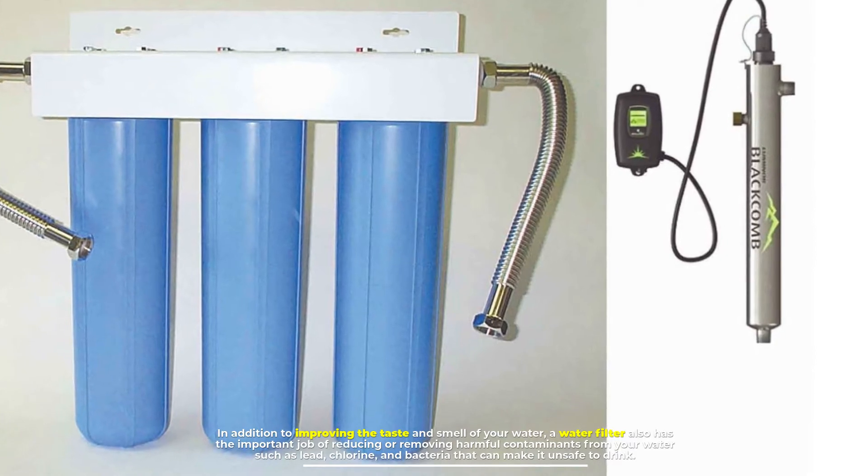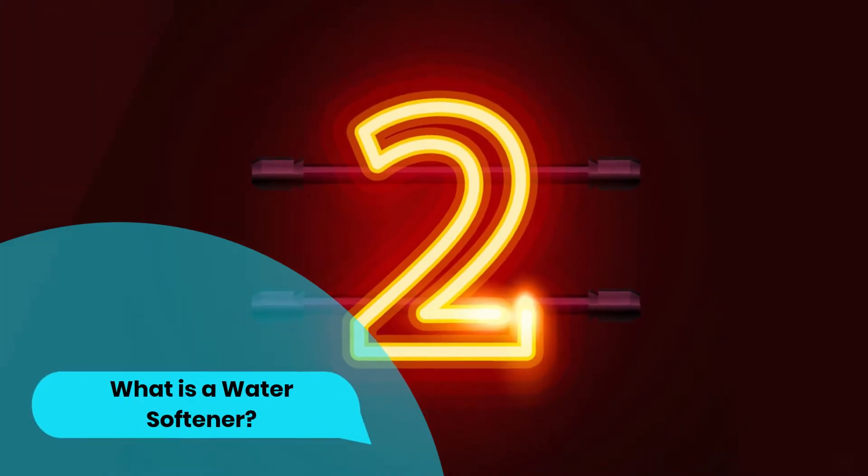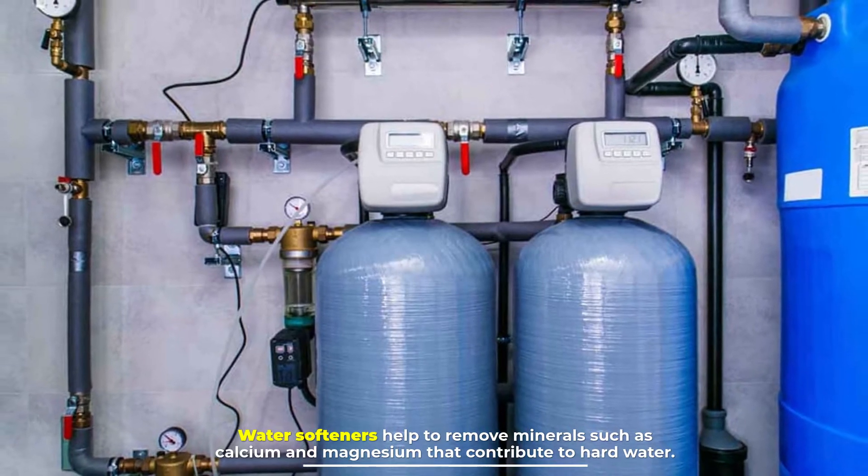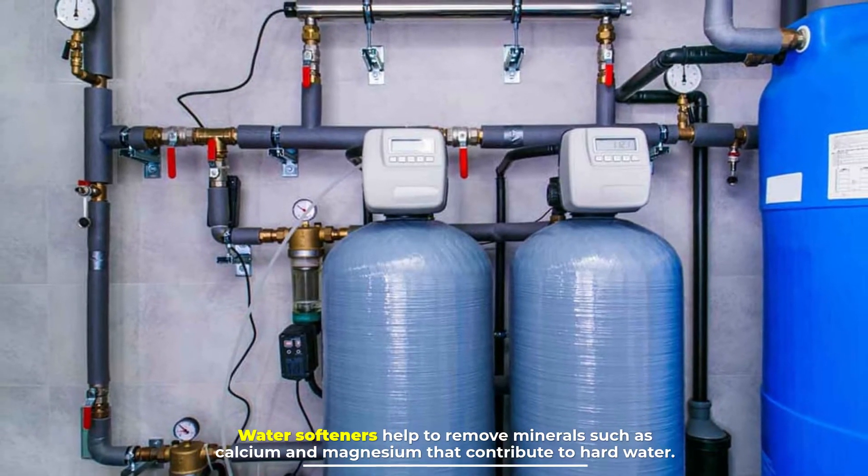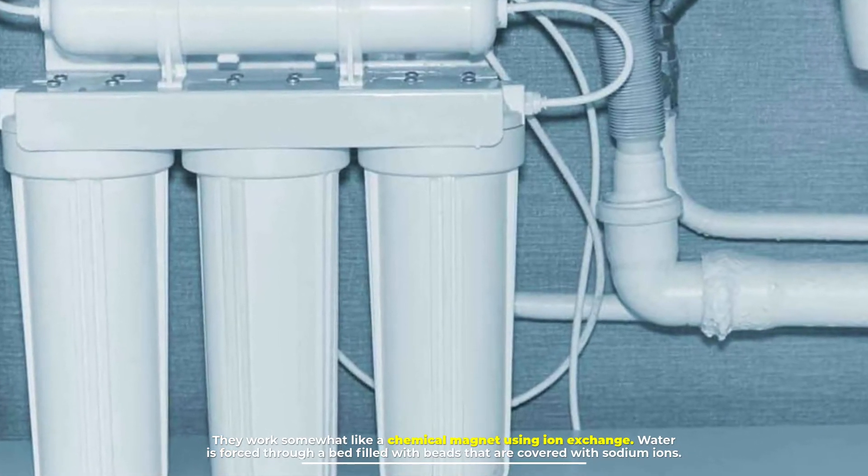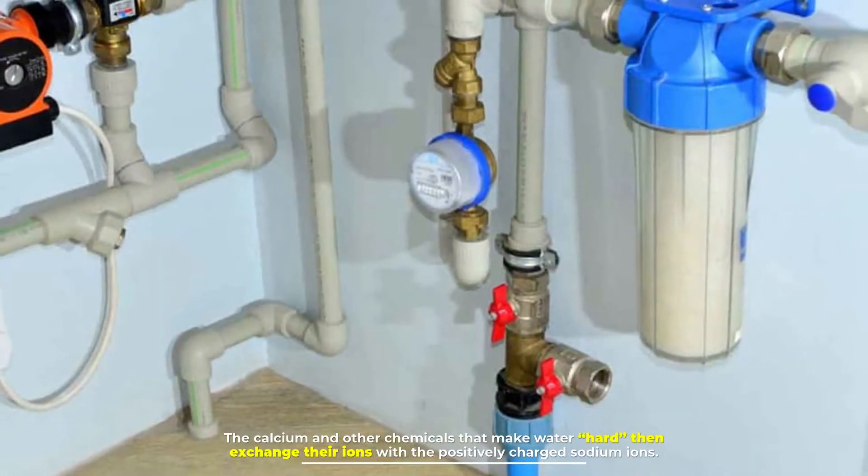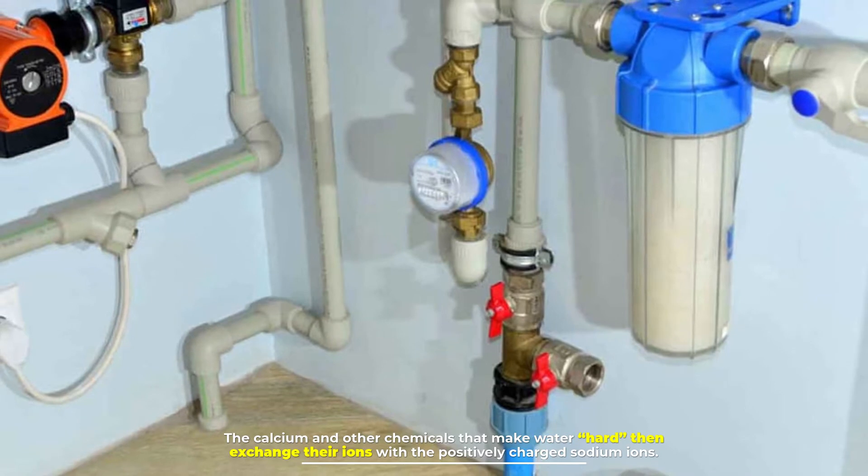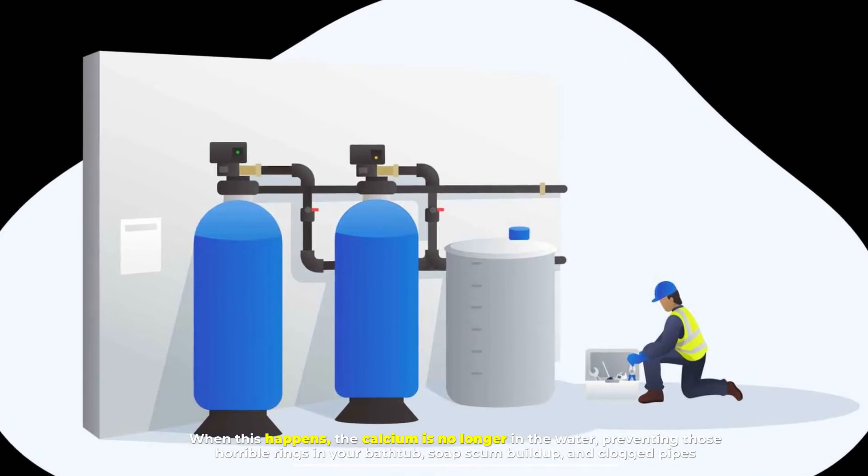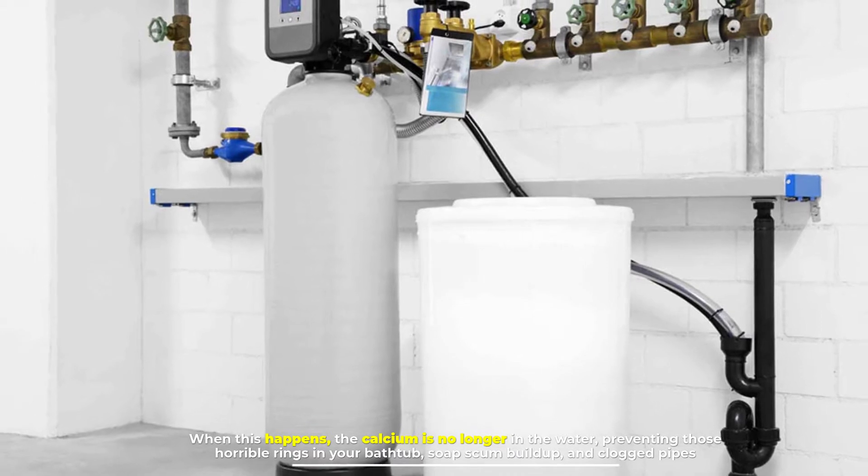Number two: What is a water softener? Water softeners help to remove minerals such as calcium and magnesium that contribute to hard water. They work somewhat like a chemical magnet using ion exchange. Water is forced through a bed filled with beads that are covered with sodium ions. The calcium and other chemicals that make water hard then exchange their ions with the positively charged sodium ions. When this happens, the calcium is no longer in the water, preventing those horrible rings in your bathtub, soap scum build up and clogged pipes.